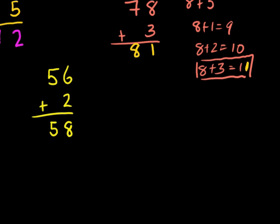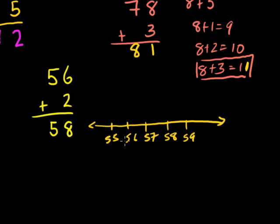And this is one you actually could have drawn on the number line. It wouldn't have been too hard. So if you were to draw the number line, let me start at maybe 55, 56, 57, 58, 59. But if we start at 56, right there, and we add 2 - we go up 1, we go up 2 - we end up at 58. So just like that, we're able to do that problem. I'll see you in the next video.